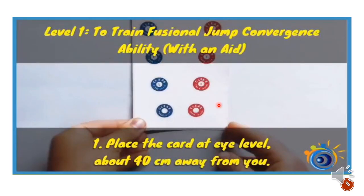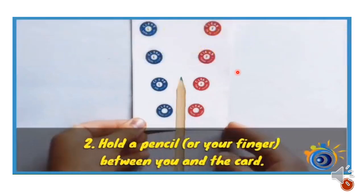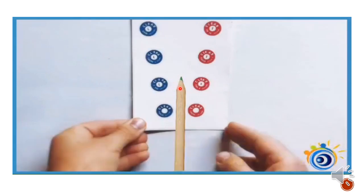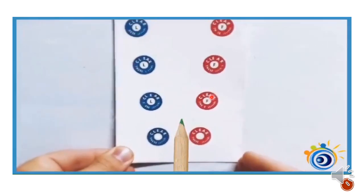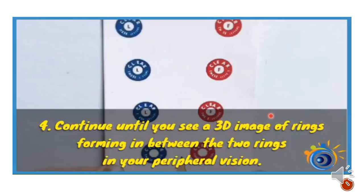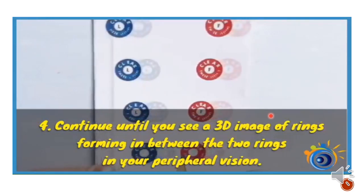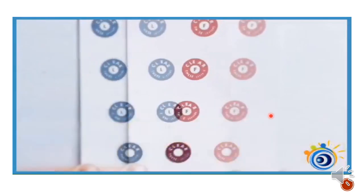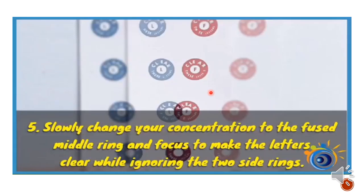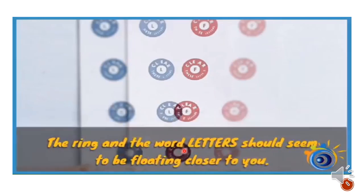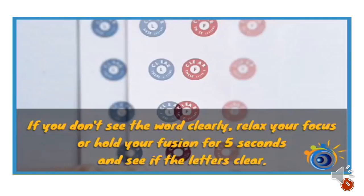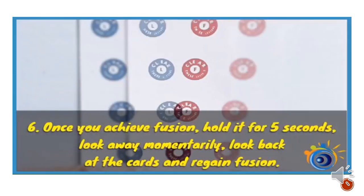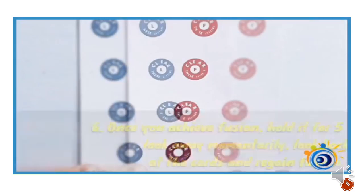Lifesaver cards are used to train jump convergence ability. The patient looks at a pencil to initiate convergence, which helps make the lifesaver circle single. Due to physiological diplopia, the two targets become single and produce a depth perception image. The patient needs to jump their vergences between fixation points at increasing levels, keeping the letters written on the card clear for 5 seconds, then change fixation.